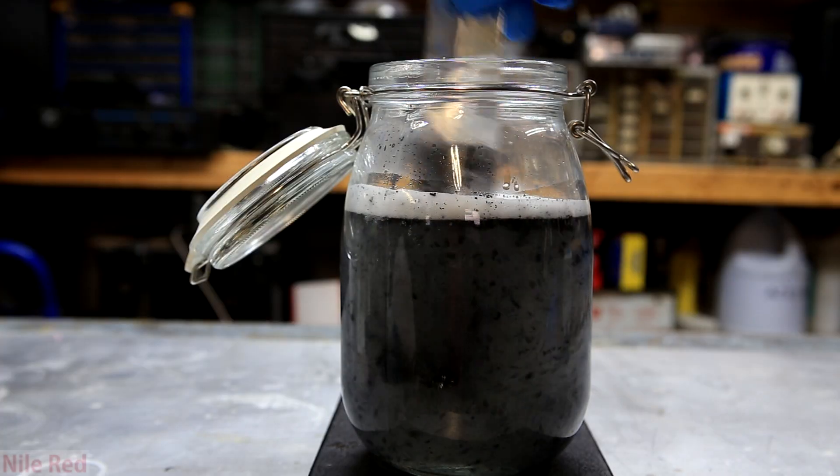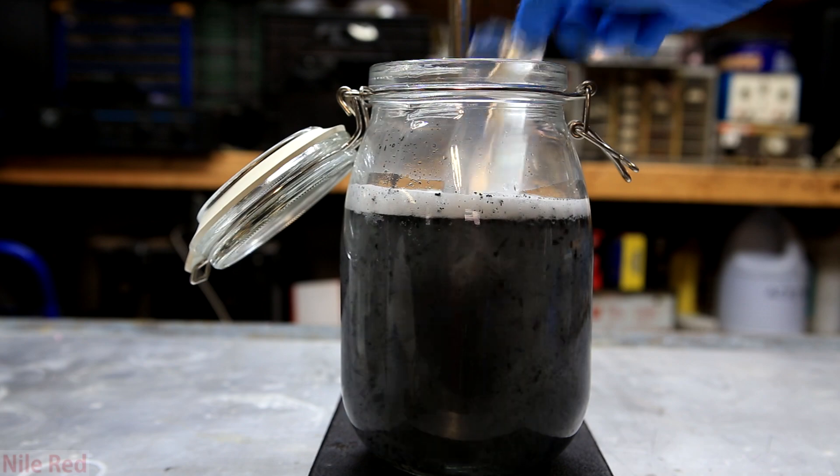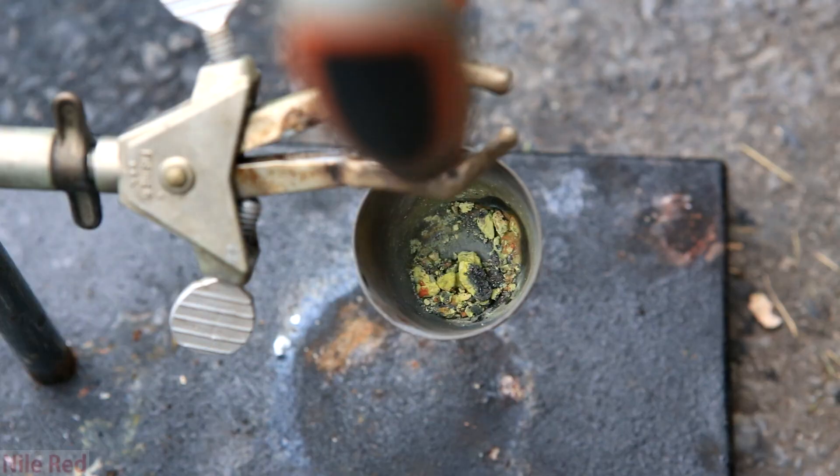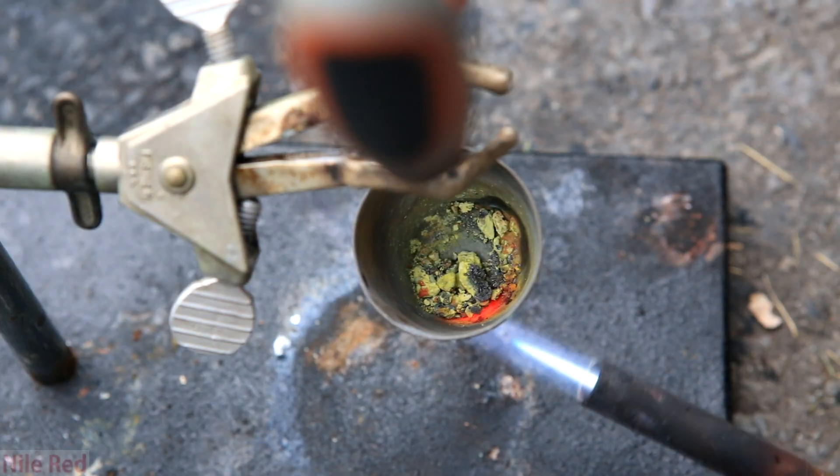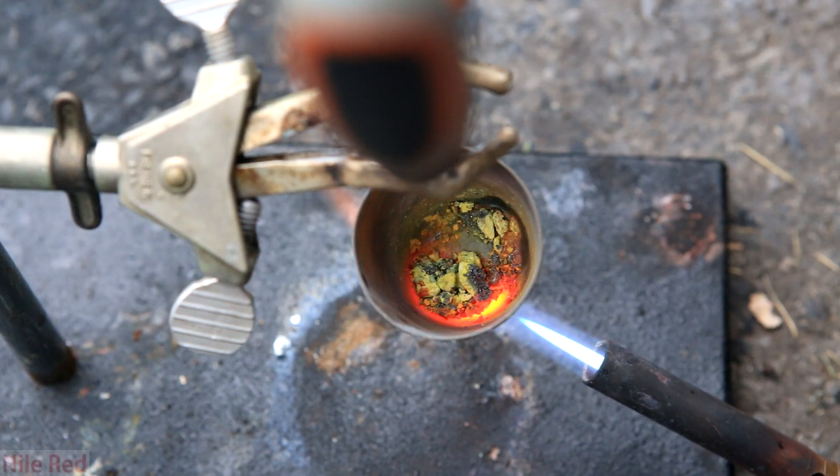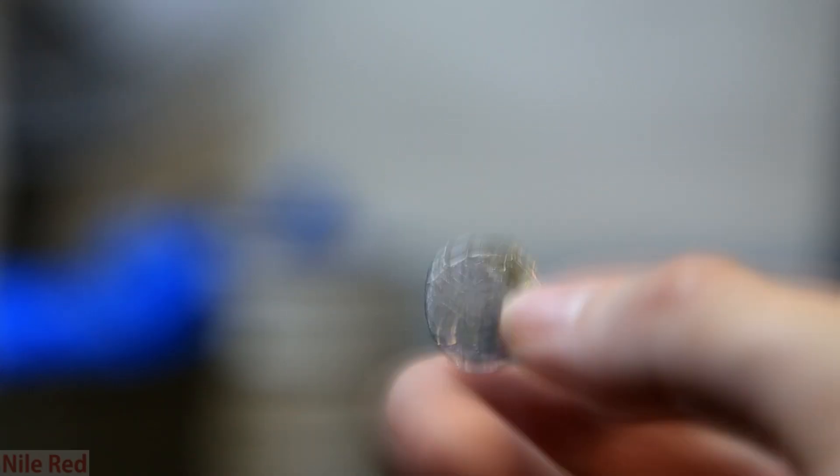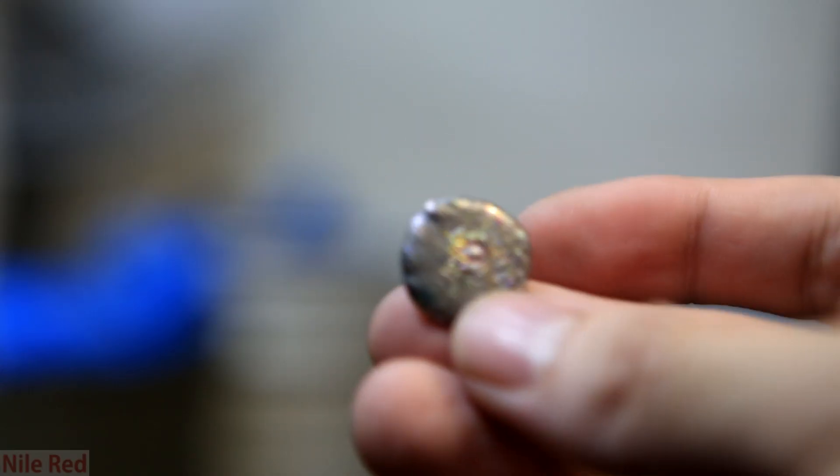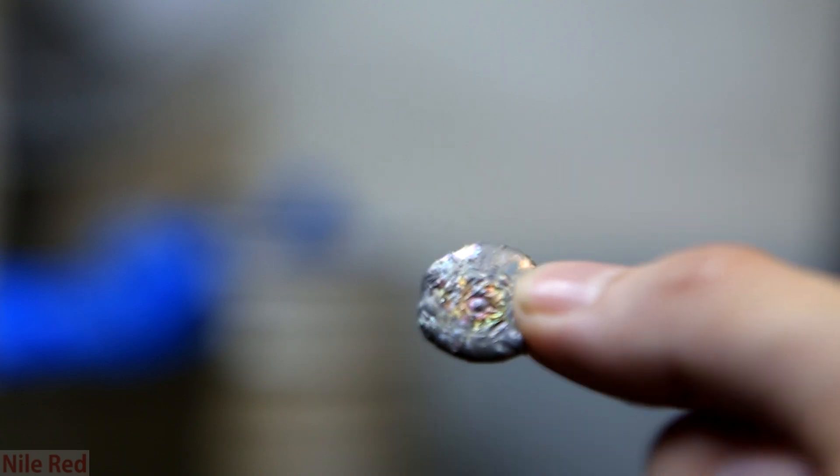The most notable use of bismuth in pharmaceuticals is its use in Pepto-Bismol. In Pepto-Bismol it appears as a compound known as bismuth subsalicylate. Each pill actually contains quite a lot of this molecule, and in this video we're going to pull out the bismuth metal from it.